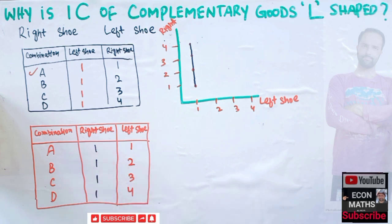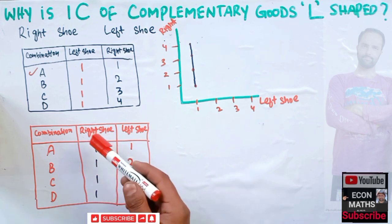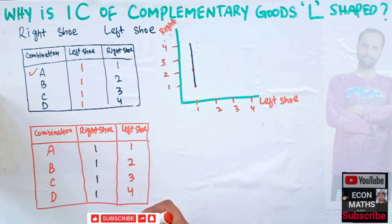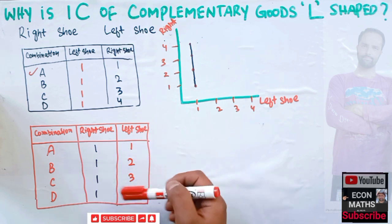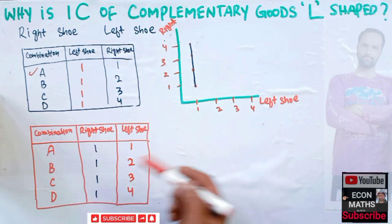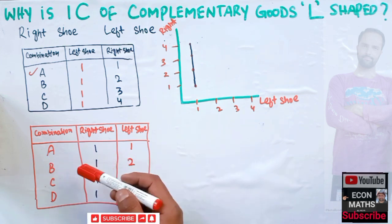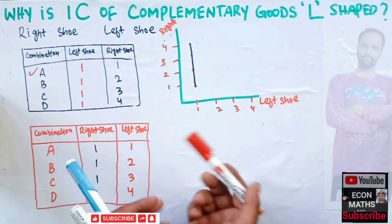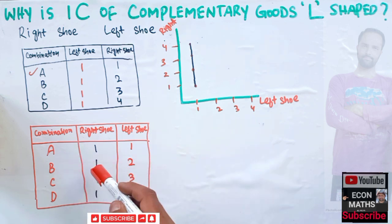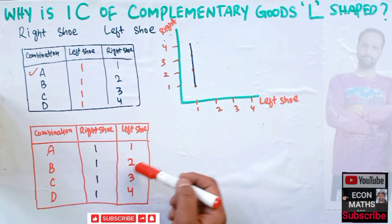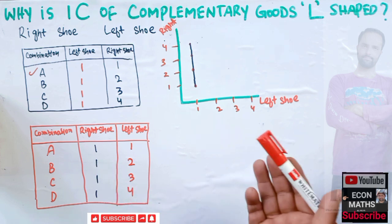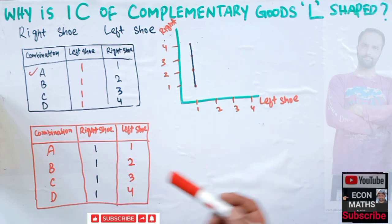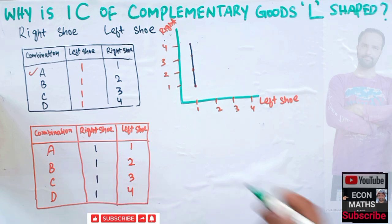Now for the second set of combinations, we keep the right shoe constant at one unit and increase the units of left shoe. The logic is the same: in combination A, one left shoe and one right shoe make one usable pair. But in combination B, the extra left shoe is of no use because its utility would be zero unless it is coupled with another right shoe.